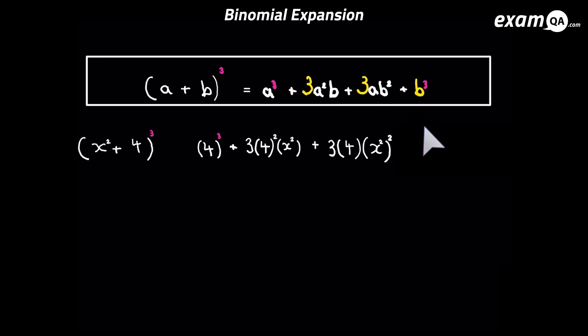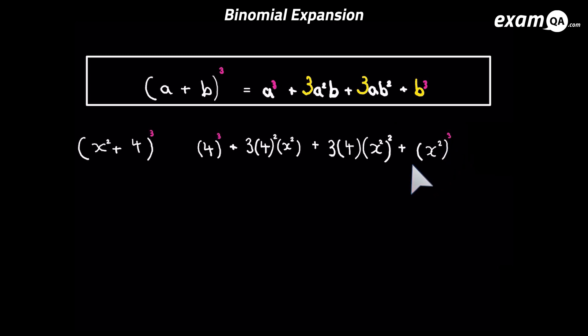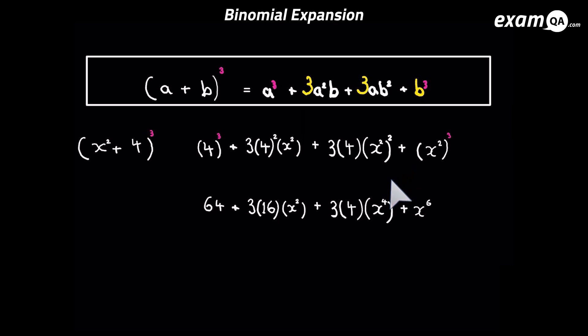In the final term, 4's power reduces to 0 — meaning it's really non-existent, so we don't need to put it in — and x squared's power goes to the highest power which is 3. The coefficient from the triangle will be 1. So we've done the expansion, we just need to simplify it now. Let's put it in the simplest form — and there it is.